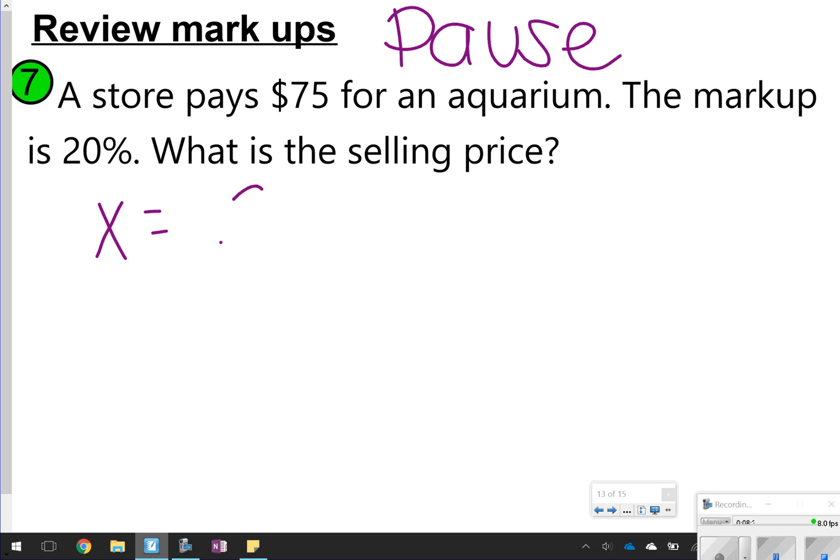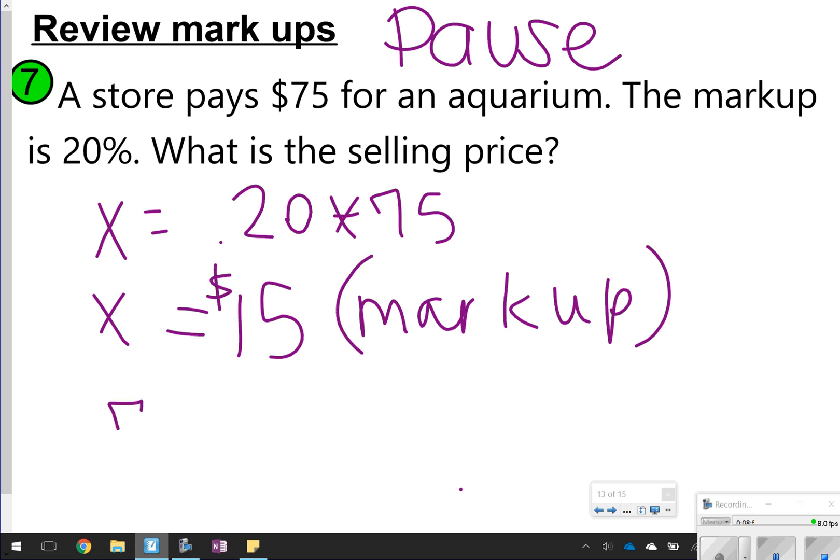Here we go. X is equal to 0.20 times 75, so 0.20 times 75 gives us 15. So that's going to be the markup. And then once again, to find the selling price, I'm going to take how much they bought the aquarium for and add that $15 profit to get $90 selling price.